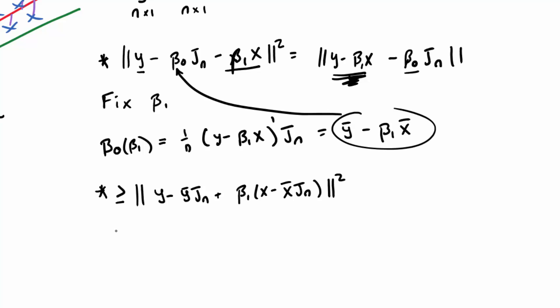So now I can rewrite this as y tilde minus beta 1 x tilde, where y tilde is the centered version of y, and x tilde is the centered version of x.